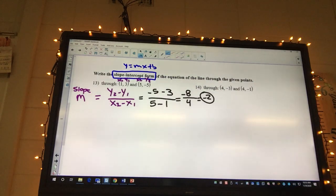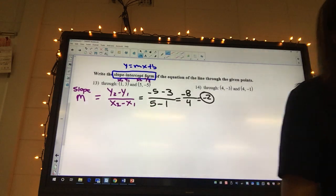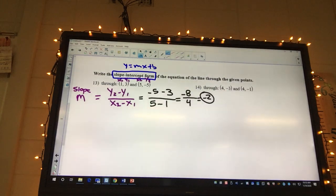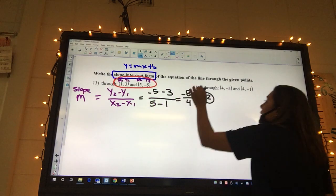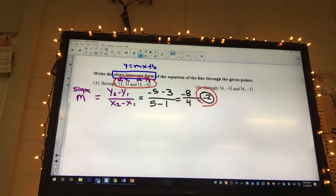Which is just, what'd you get on your calculator? Negative 2, you should have got a negative 2. And what is negative 2? We were finding the slope. So now we have some points and we have a slope, so what are we going to use now?